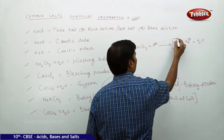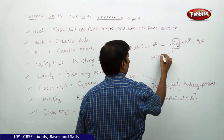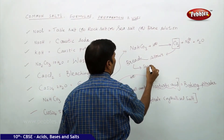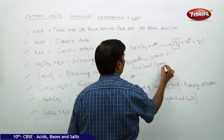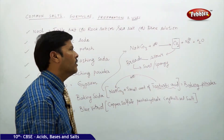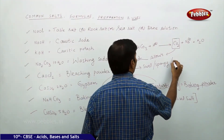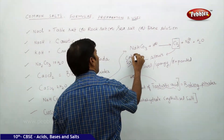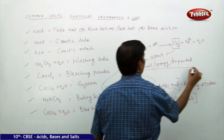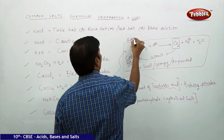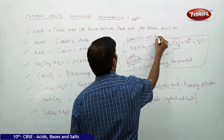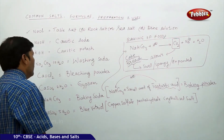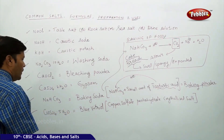This carbon dioxide gas allows the bread to swell and become spongy and expanded. This applies to bread or cake — this is the overall mechanism of baking of food stuffs.